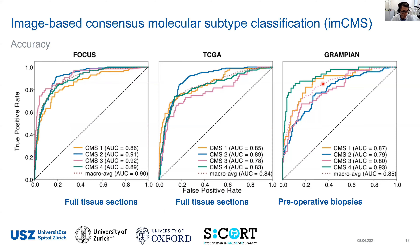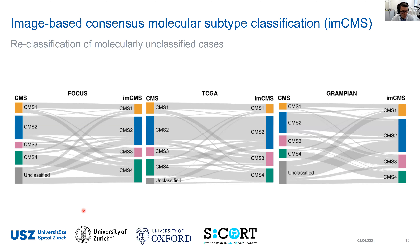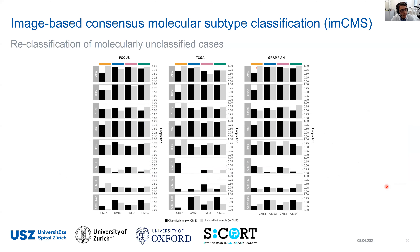The performance of image-based classification versus molecular ground truth shows an AUC of 0.9 on full tissue sections, 0.84 on TCGA validation, and 0.85 on biopsies — very strong classification results. Importantly, we were also able to resolve unclassified cases from molecular data using just the image, reclassifying all such cases across all cohorts to image-based classes. Indeed, cases reclassified using image data match the originally classified cases exactly in the distribution of secondary molecular features expected between given classes, strongly indicating that image-based reclassification is accurate and useful.